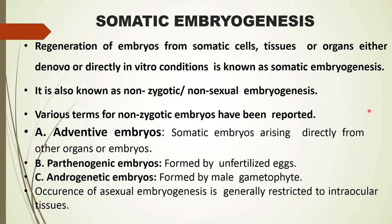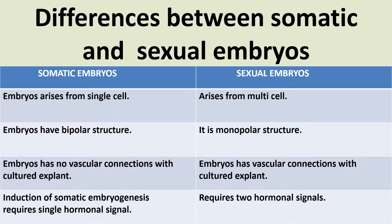Various terms for nonzygotic embryos have been reported. Adventive embryos: the somatic embryo arises directly from other organs or embryos. Parthenogenic embryo: the somatic embryo is formed by an unfertilized egg. Androgenic embryo: the somatic embryo is formed by the male gametophyte. Occurrence of asexual embryogenesis is generally restricted to intraocular tissue.